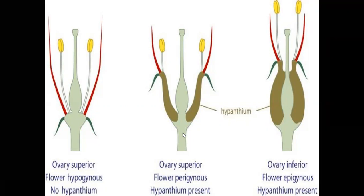In perigynous flowers, the ovary is half superior or half inferior. In these flowers, a hypanthium is present. The calyx, corolla, and androecium are developed from the lateral side of the ovary, under the hypanthium. The perigynous flower shows a half superior or half inferior ovary.